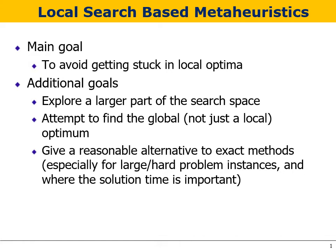Let's start with local search-based metaheuristics. In these algorithms, the main goal is to avoid getting stuck in local optima. In local search algorithms, the algorithm stops whenever a local optimum is encountered, but this local optimum can be far from the global optimum. Therefore, in metaheuristic algorithms, by allowing non-improving moves or with different mechanisms, we try to avoid getting stuck in local optima. Additional goals include exploring a larger part of the search space and finding the global optimum, not just a local one.